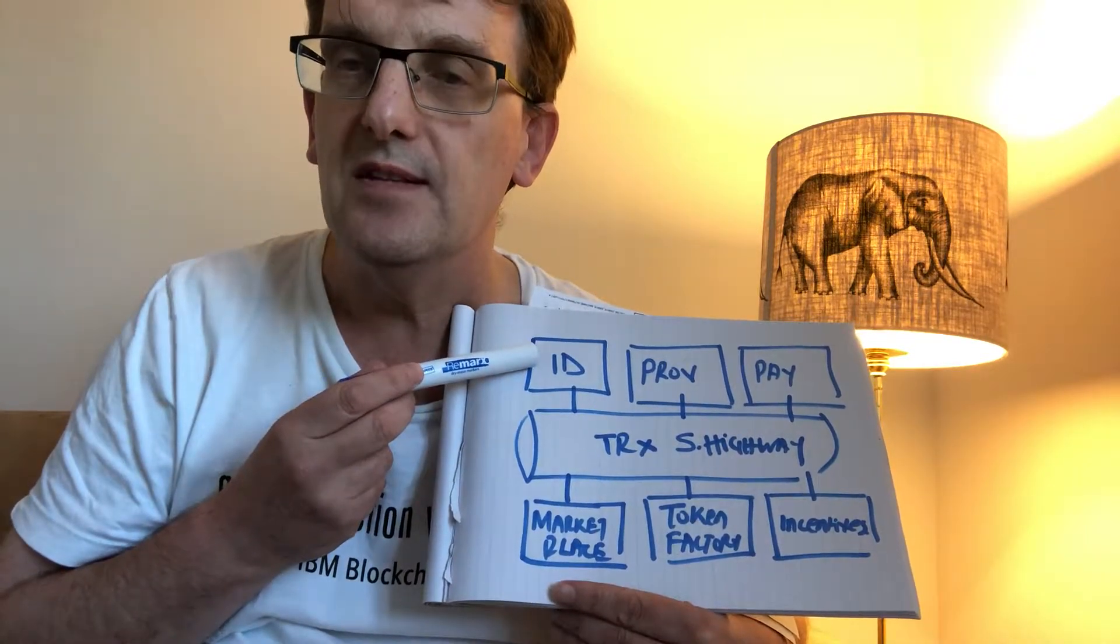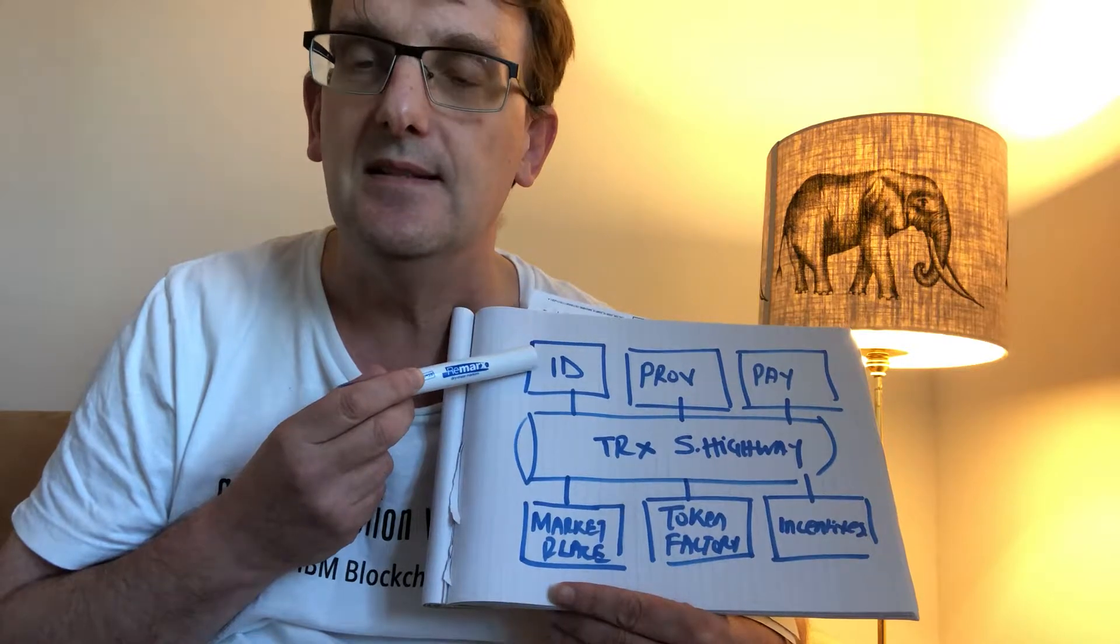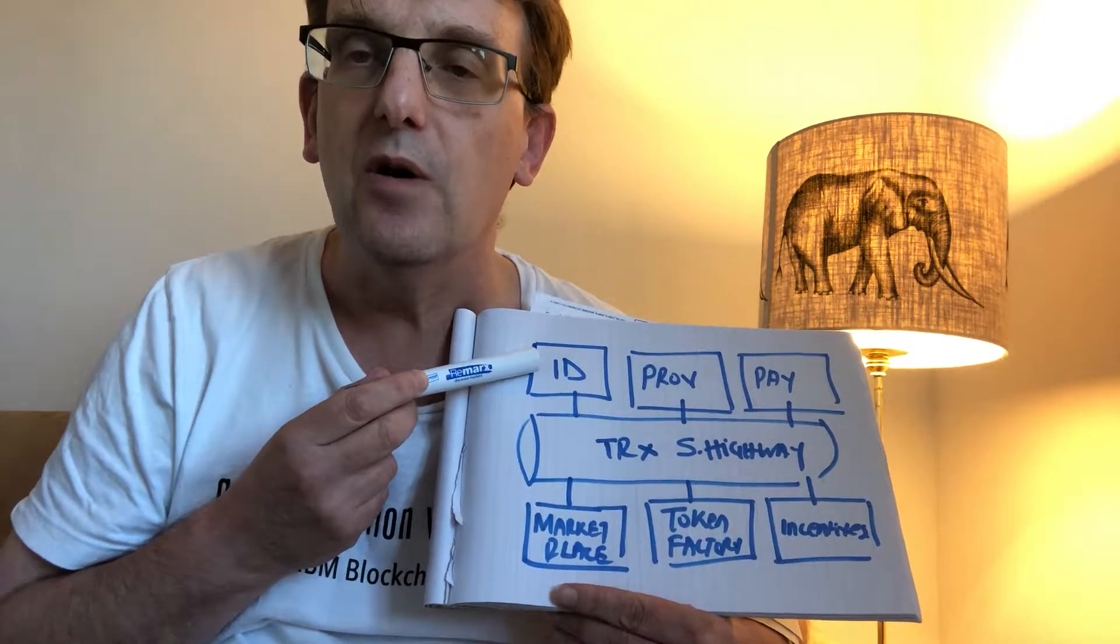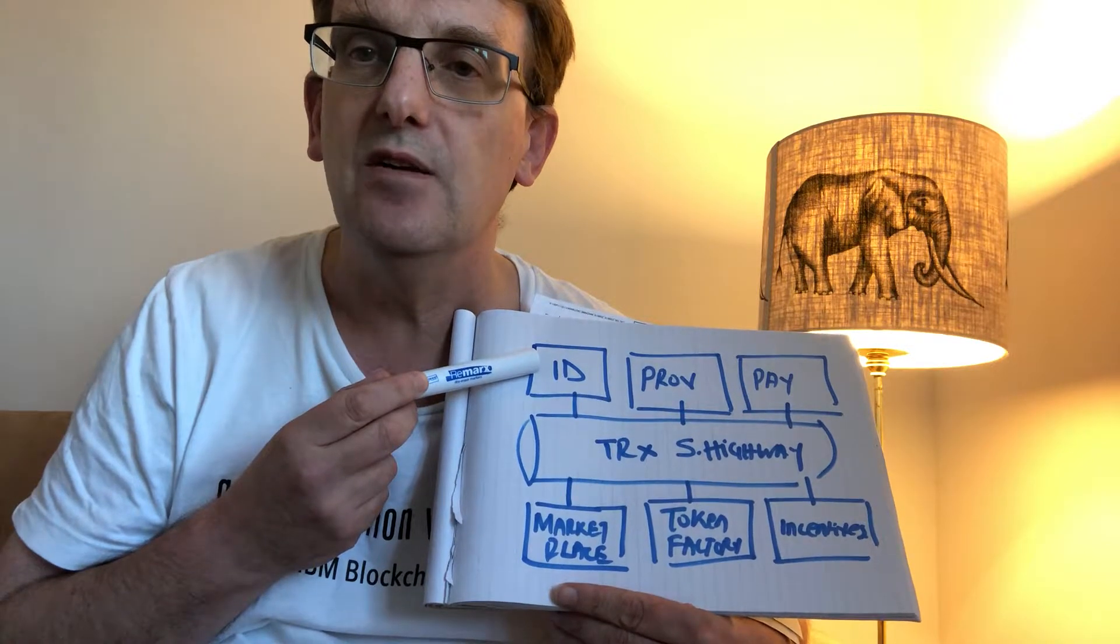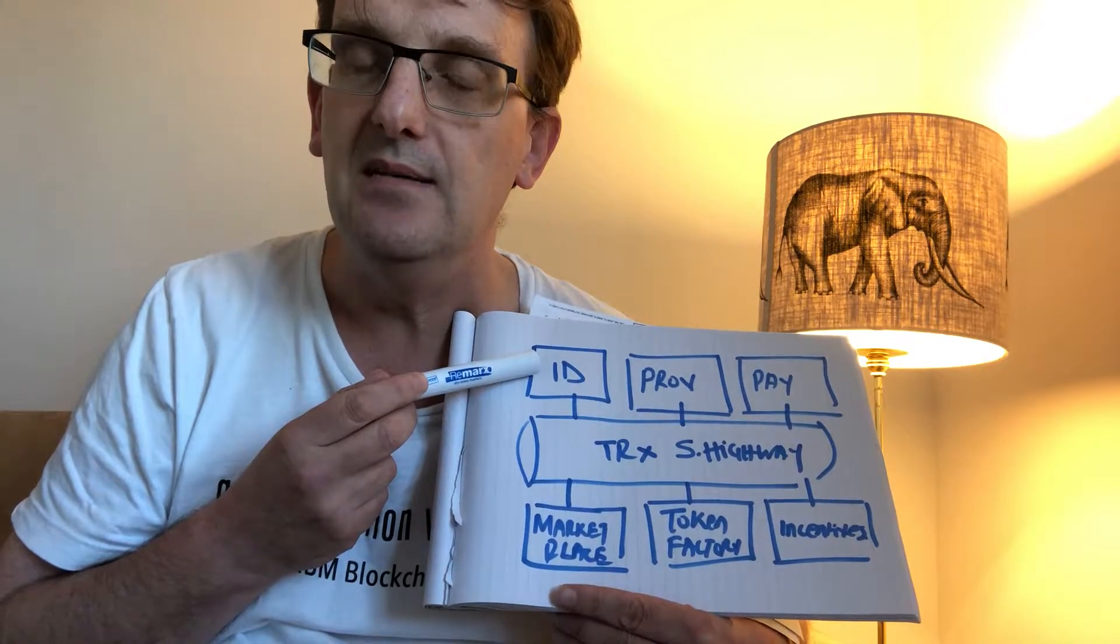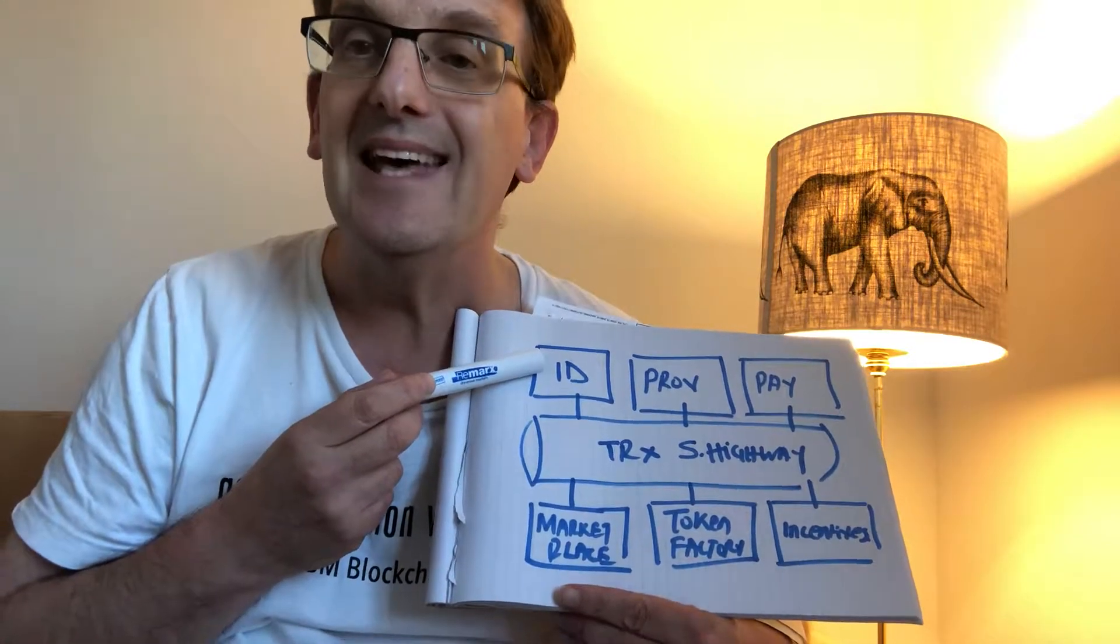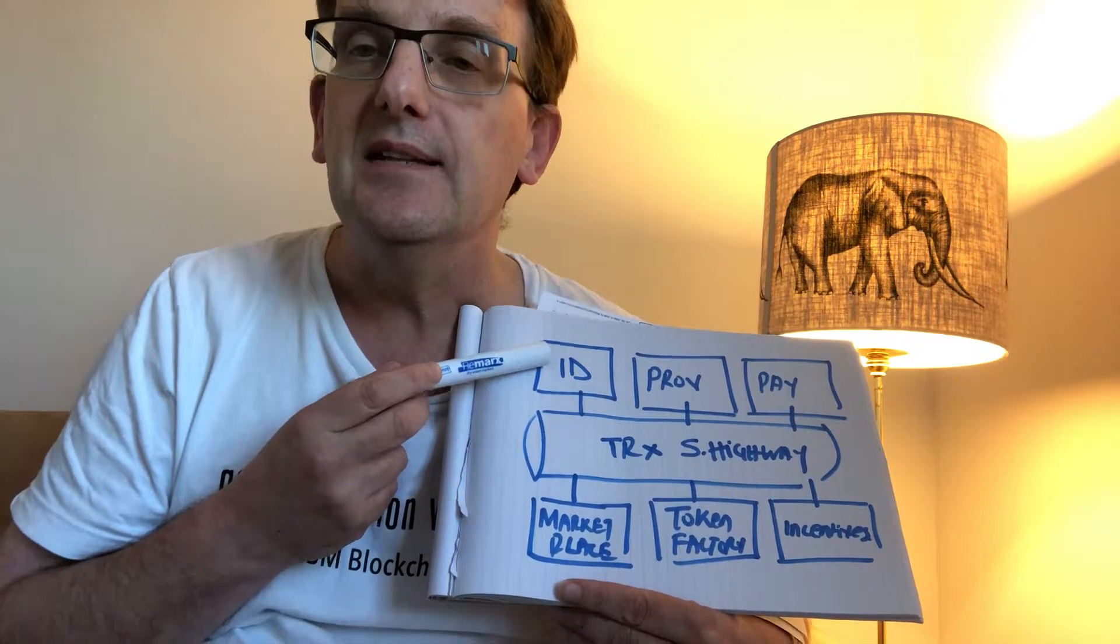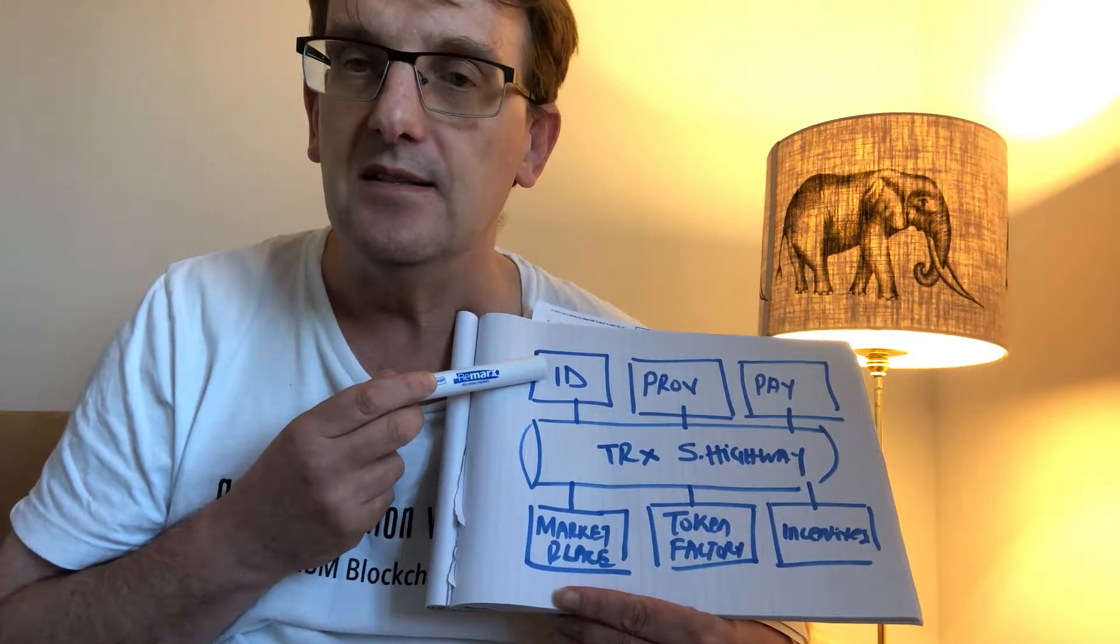Core to this highway is going to be identity. It's going to be necessary to capture on the blockchain the identity of individuals, you and me, companies, and things like cars, autonomous cars, for example.